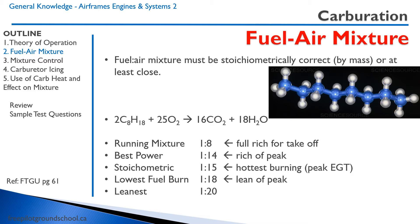There are a number of different fuel-air mixtures. The best running mixture is one to eight — one part fuel, eight parts air — and that is full rich for takeoff, which keeps the engine rather cool. The best running power is one to 14. The stoichiometric ratio is one to 15 by mass, meaning you will have no excess — only carbon dioxide and water vapor coming out, with no excess oxygen or octane. The lowest fuel burn is lean of peak at one to 18, and the leanest you can run the engine is one part fuel to 20 parts air, all by mass.